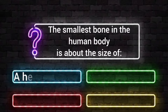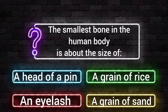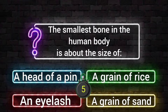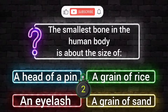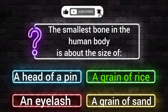The smallest bone in the human body is about the size of a head of a pin, a grain of rice, an eyelash, or a grain of sand. Your time starts now. The answer is a grain of rice.